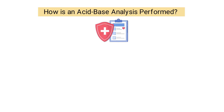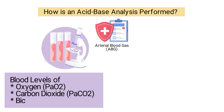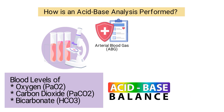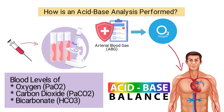An acid-base analysis can be performed by looking at the results of an arterial blood gas, or ABG. It's a test that measures the blood levels of oxygen, carbon dioxide, bicarbonate, and acid-base balance in the body. A sample of blood is collected from a syringe, and the results are used to assess how well oxygen is being distributed throughout the body.